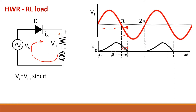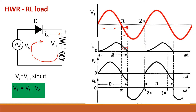This is the output current waveform. Next, we will see the output voltage. The diode is in conduction till beta, so the output voltage is equal to the supply voltage till beta — the same waveform till beta, and after that it becomes zero. So output voltage equals supply voltage when the diode is in conduction. For the diode voltage: whenever a diode is conducting, the voltage across it is zero, so that waveform is zero till beta.